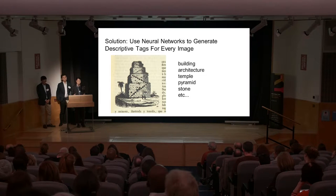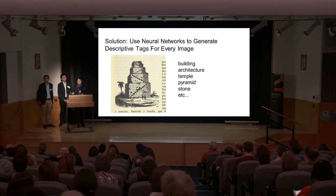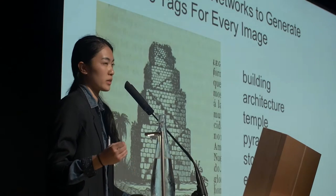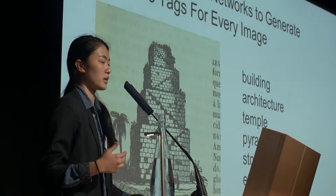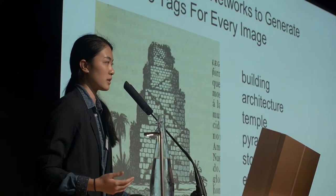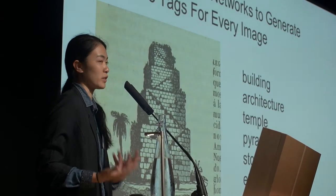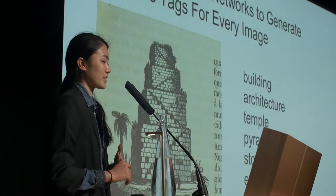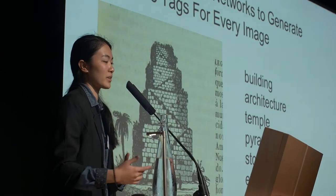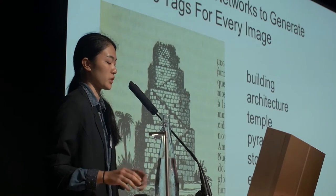Luckily, in the past couple of years, computer vision has been getting better and better due to research in neural networks. Neural networks are a computer vision technology that's been used for image recognition very successfully in the past couple of years, sometimes even outperforming humans in image recognition tasks. Our project was focused on using neural networks to generate descriptive tags for all one million images in the British Library collection.